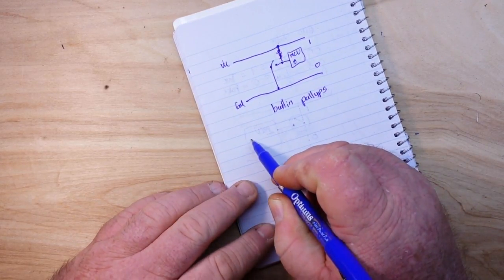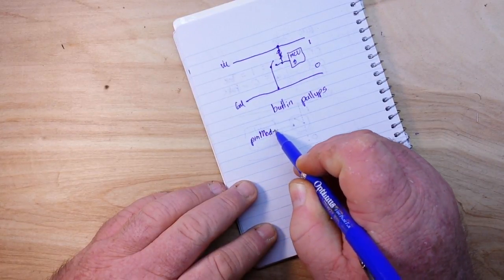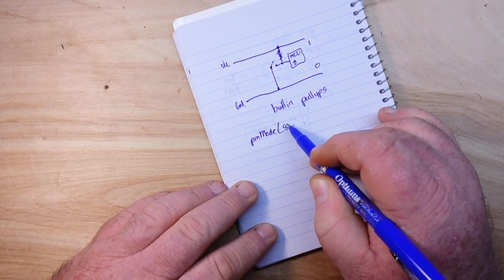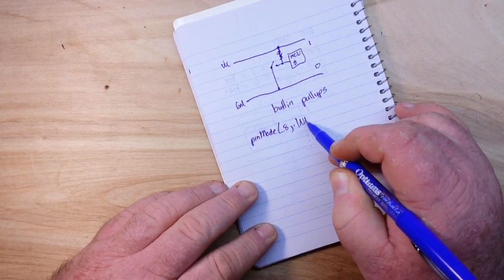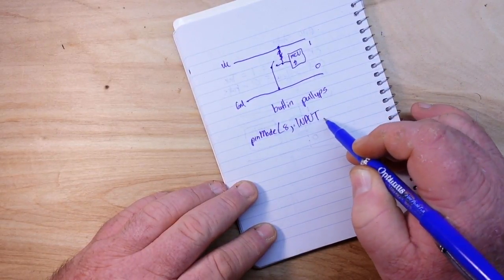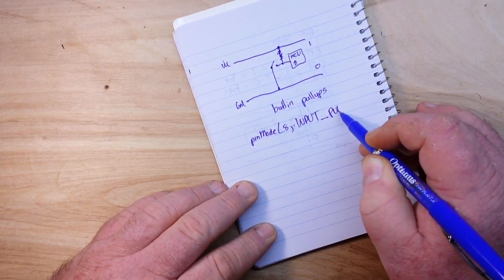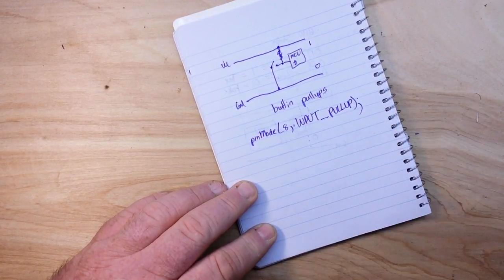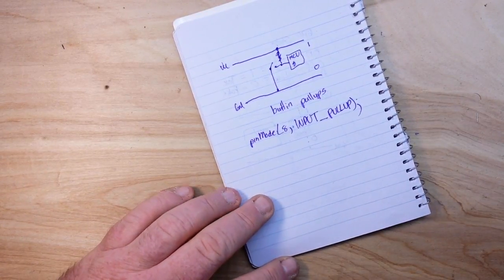you just say pin mode 8 comma input underscore pull up, and that's all you need.